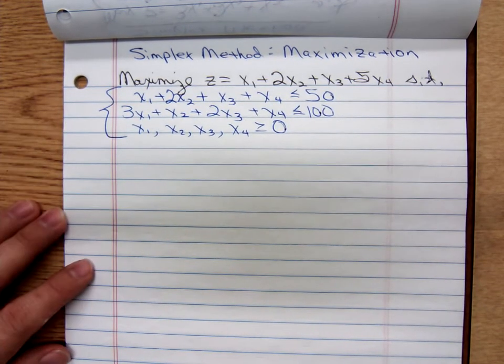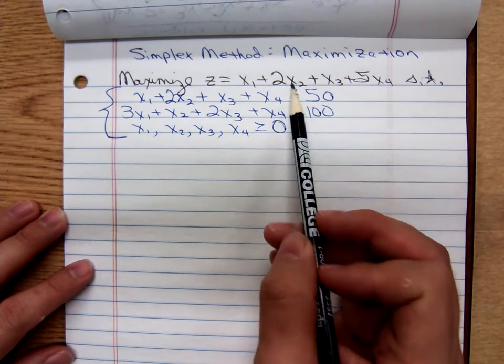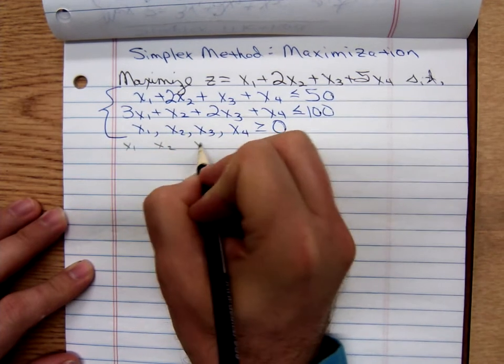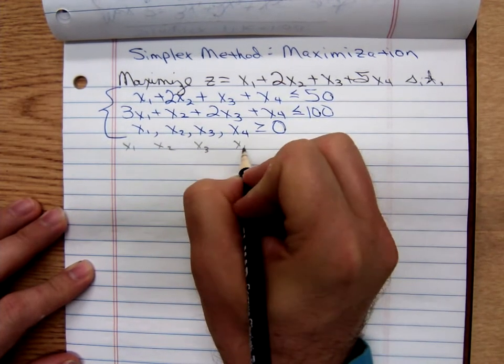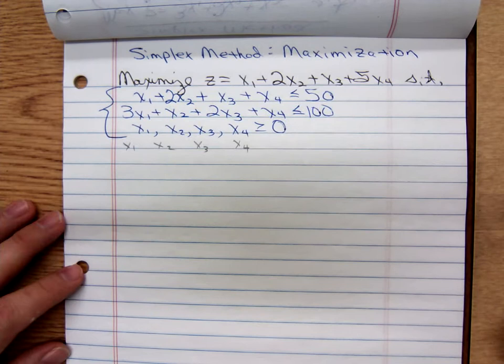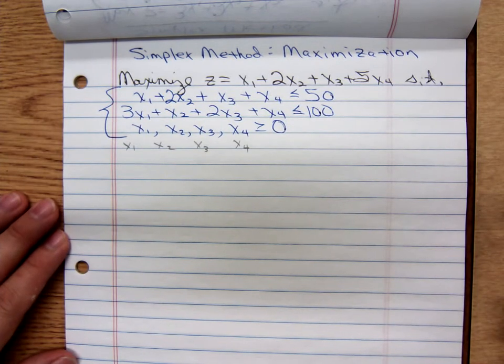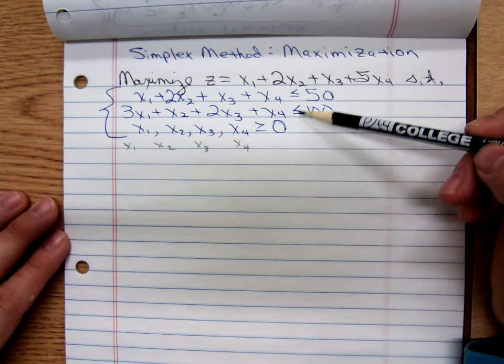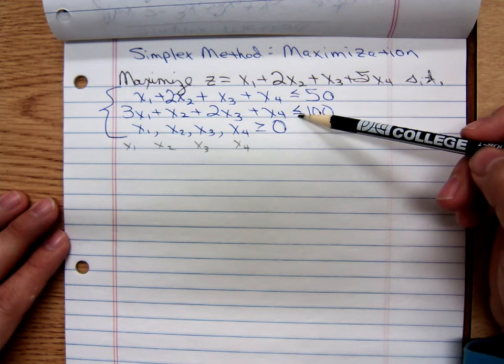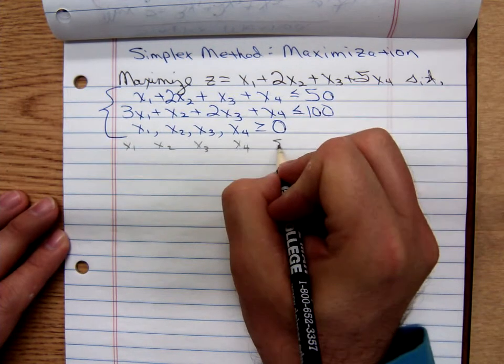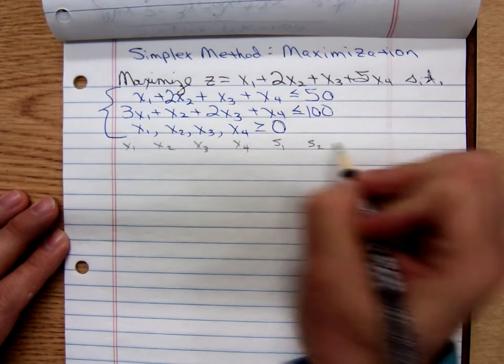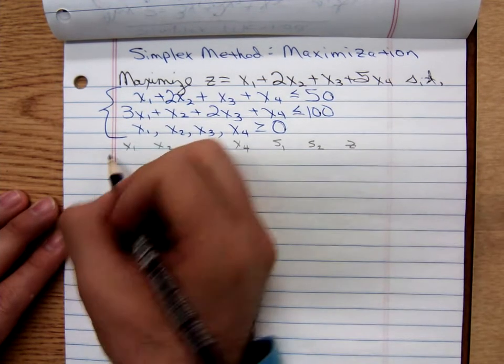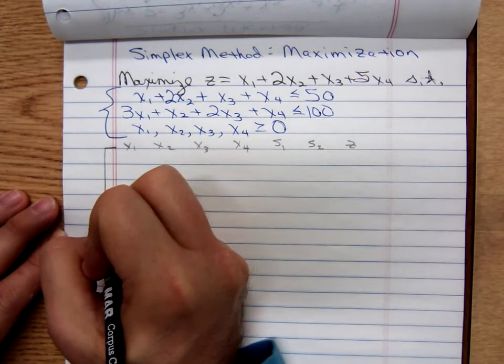Here, we'll set up our matrix. We have four x's, so we'll have x1, x2, x3, x4. How many slack variables will we have? Do you remember? That depends upon the number of less than or equal to inequalities. There are two of them, so we're going to have two slack variables. We need a column for z as well. So we're going to have three rows in this matrix.